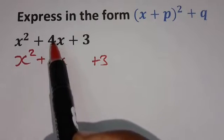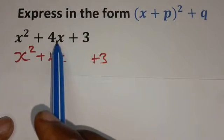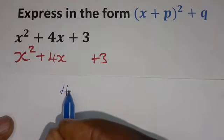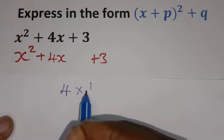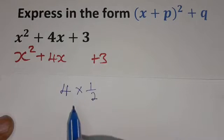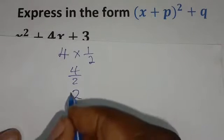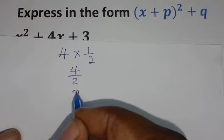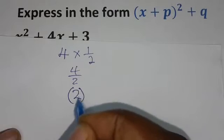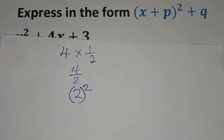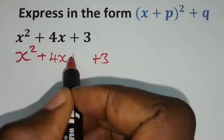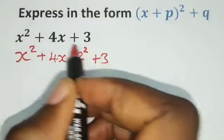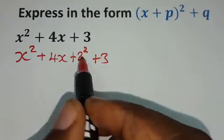Then half it. The coefficient of x is a 4. We are going to half it by multiplying it by 1 over 2. So we are going to have 4 over 2, which is 2. So half the coefficient of x is 2. Then we square it. We are going to add the square of half of the coefficient of x, which is 2 in this case.